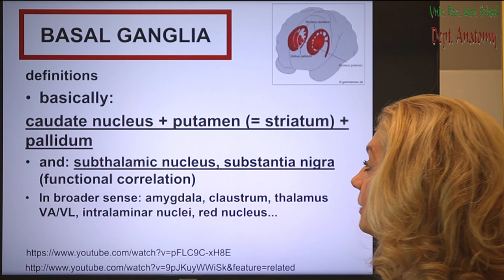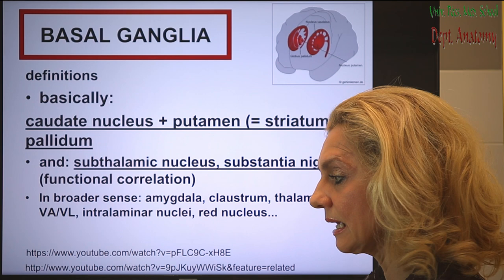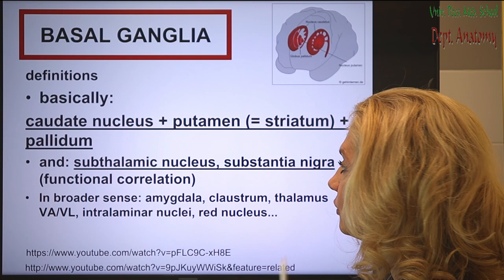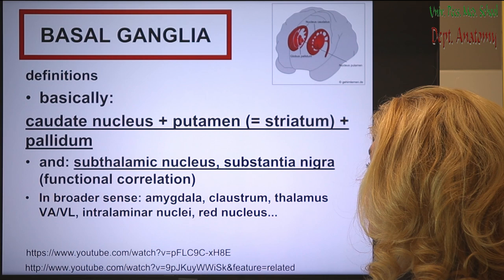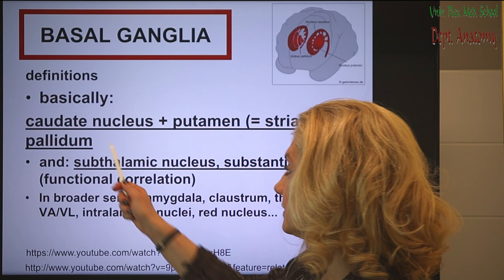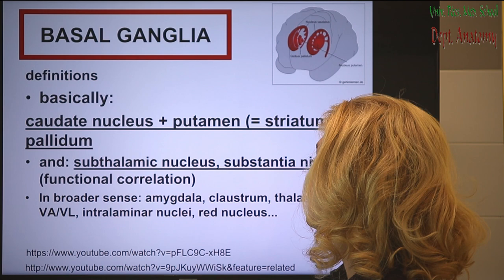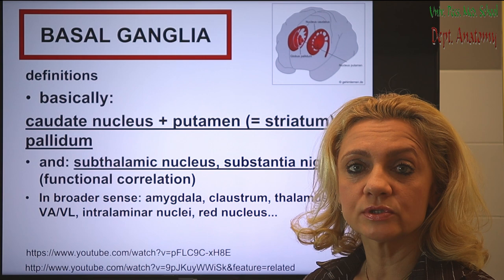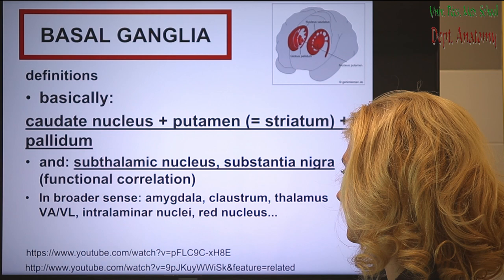Today I'm going to talk about the basal ganglia and their connections. The definitions are not entirely clear, but we're going to focus on motor coordination, including the nuclei that mainly belong to the motor group of the basal ganglia: the caudate nucleus and putamen, together called the striatum, the globus pallidus or pallidum, plus the subthalamic nucleus and substantia nigra, which are functionally in very close association with the basal ganglia.